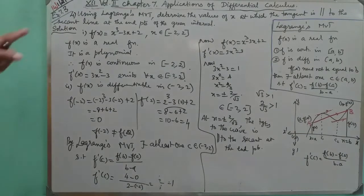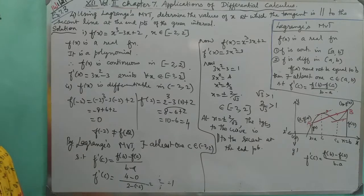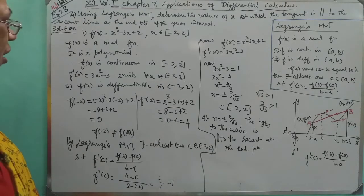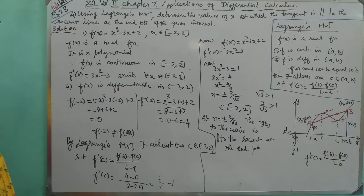Hello students. Hi, this is your 7.3 sum number 4. Using Lagrangian's mean value theorem, determining the values of x at which the tangent is parallel to the secant line at the end points of the given interval.